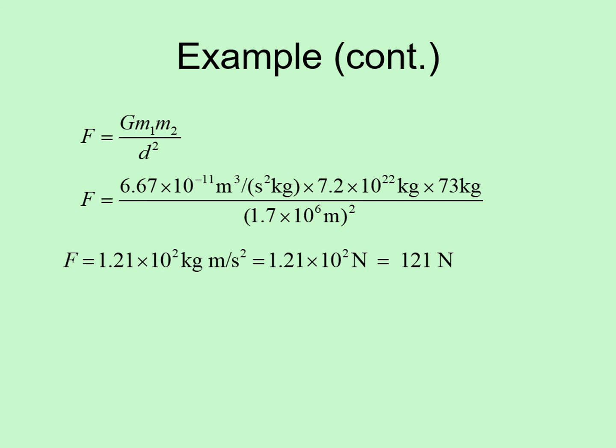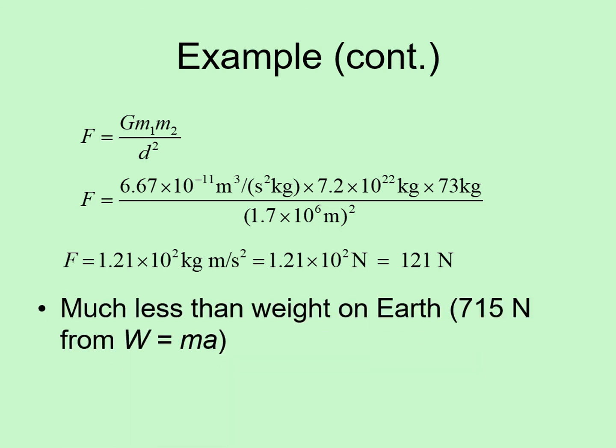Remember earlier we saw that we could calculate weight on Earth using Newton's second law of motion, W equals MA? If we do this calculation for someone with a mass of 73 kilograms, we find their weight is 715 newtons. So we'd weigh a lot less on the moon than on the Earth. This makes sense. Since the moon is a lot smaller than the Earth, its gravity is weaker, and you weigh less on it.